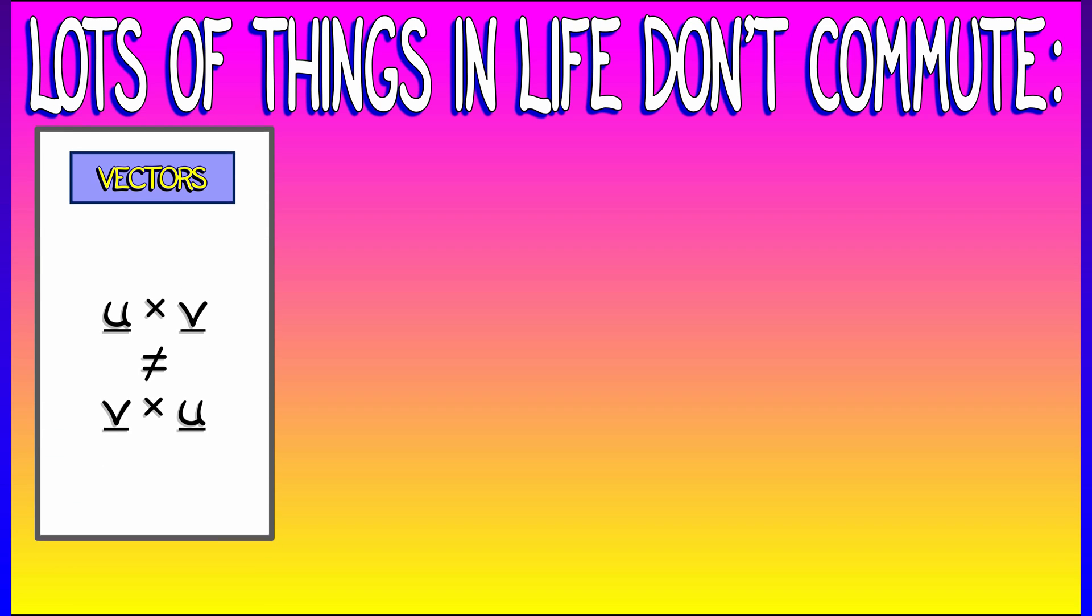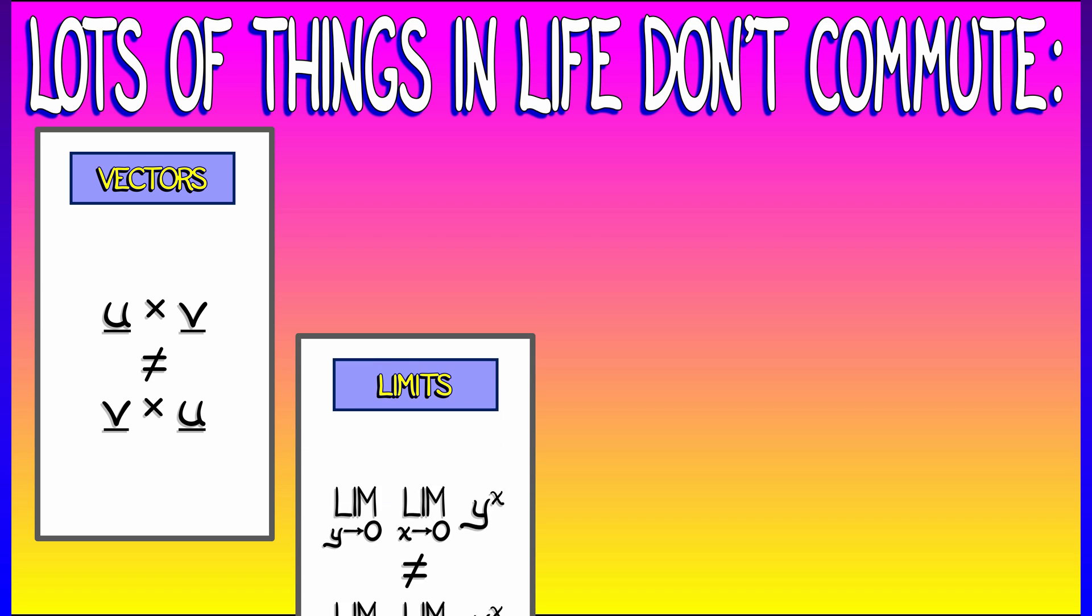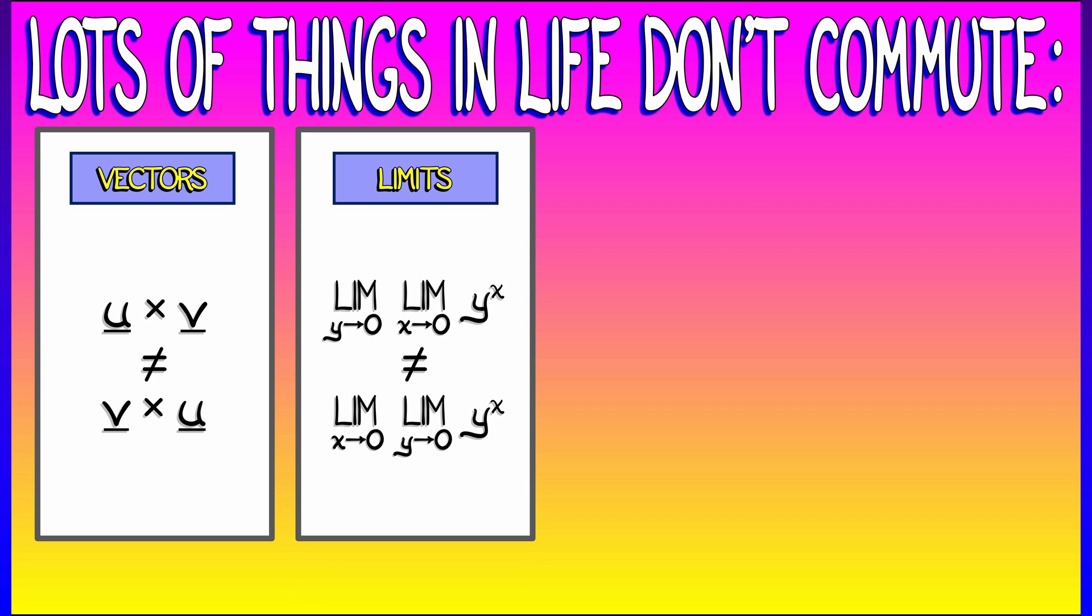Now that's maybe not so surprising. There are lots of things in life that don't commute. We've seen an example with the cross product among vectors that U cross V and V cross U are not the same vector. They differ by a minus sign in that case. There are other examples in math. For example, in single variable calculus, when you were doing limits, remember that.